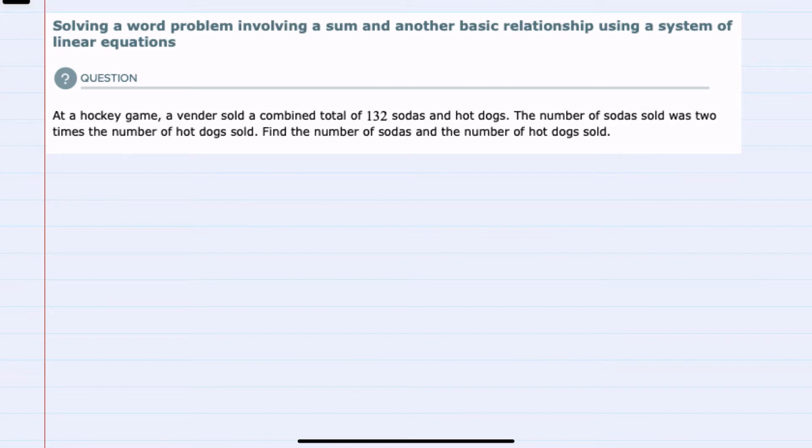At a hockey game, a vendor sold a combined total of 132 sodas and hot dogs. And we're also told that the number of sodas sold was two times the number of hot dogs sold.